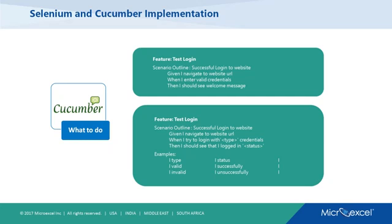For example, a feature called 'Test Login' — the business analyst writes: 'I navigate to the URL, I enter valid credentials, then I should see the welcome message.' This is more aligned with the business requirement flow. You can also run the same feature file with more than one set of data: for a successful login you give valid credentials, and for an unsuccessful login you give invalid credentials.